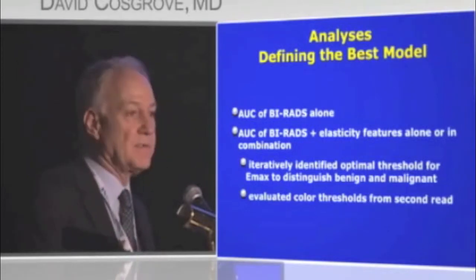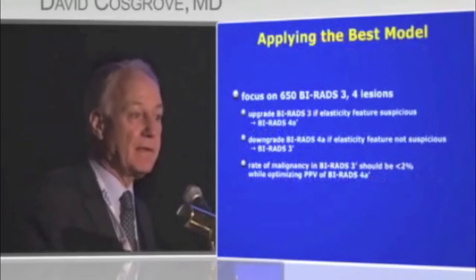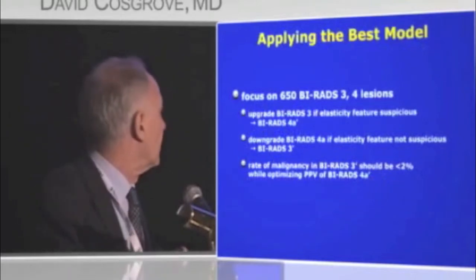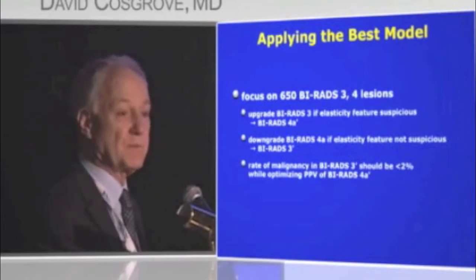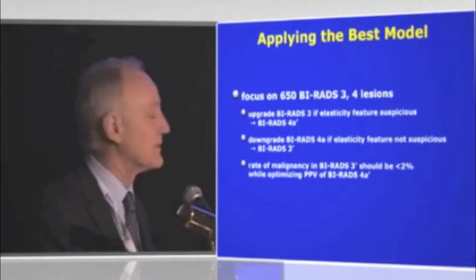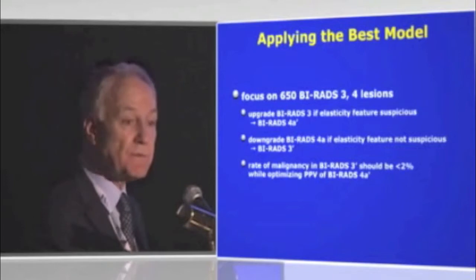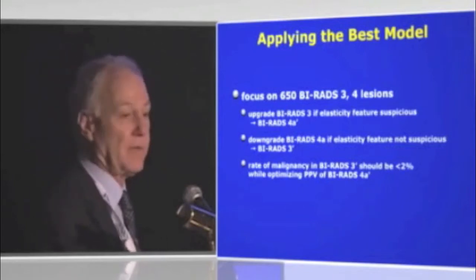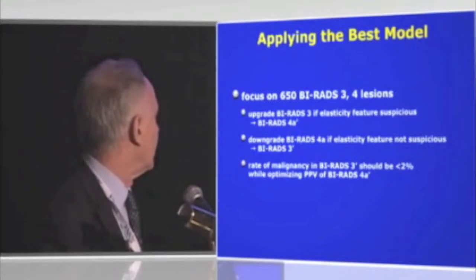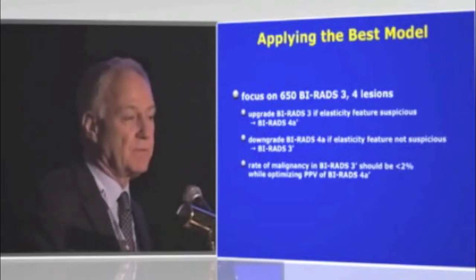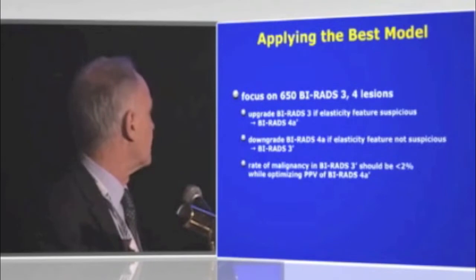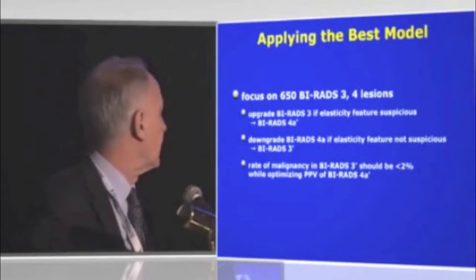We applied the rule to the BIRADS 3 and 4 lesions where SWE might make a difference. The idea was to upgrade BIRADS 3 lesions if elasticity features were suspicious, calling them 4A prime, and to downgrade 4A lesions to BIRADS 3 if elasto features were not suspicious. We targeted a threshold of not more than 2% malignancy in the 3-prime group, while not worsening the positive predictive value.